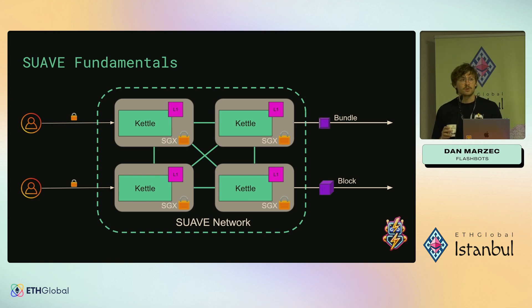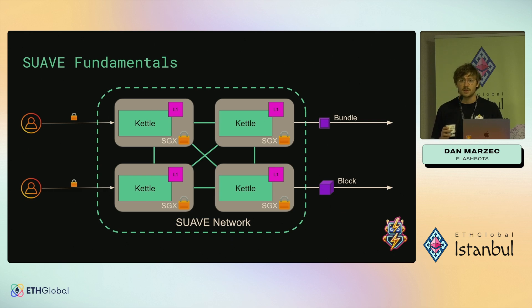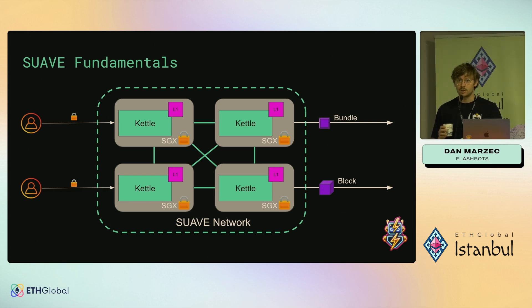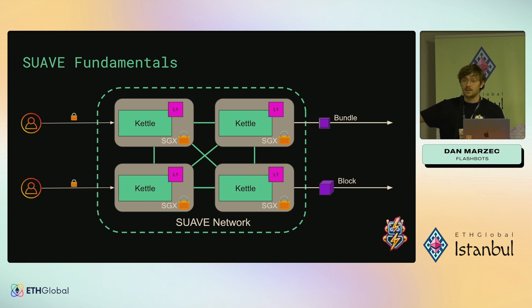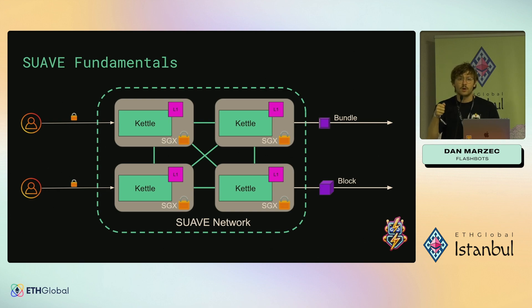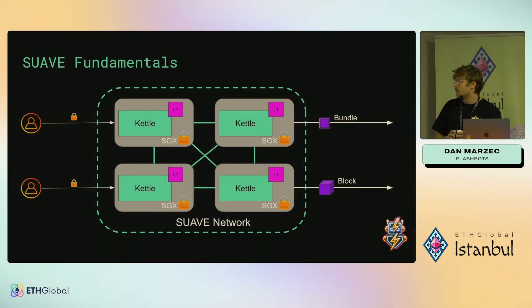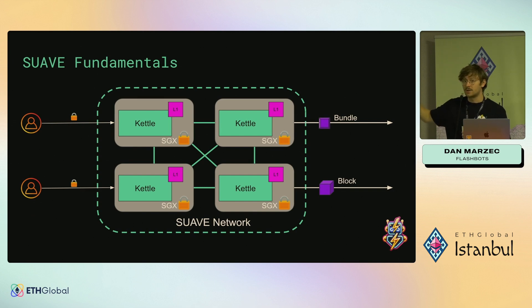The kettles also have access to ETH L1 state that is also located on SGX hardware. The user interacting with their front end will have some type of order flow — maybe it's a transaction, maybe it's an EIP-712 message. They encrypt it to the public key associated with this trusted hardware and then send it there. This is how you ensure that no one can monitor your order flow in the middle, steal it, and front run you. The Suave network kettles can put out both bundles and blocks.